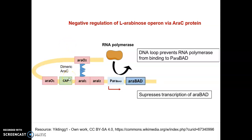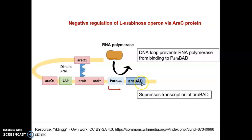The CAP region is not free for binding of the catabolite activator protein in association with cyclic AMP. When glucose levels are high, cyclic AMP levels are low, so cyclic AMP cannot bind to the CAP protein. This region is sequestered and unavailable. In the looped form, the promoter for the arabinose genes cannot be bound by RNA polymerase, so the DNA loop prevents RNA polymerase from binding to the araBAD promoter, maintaining the operon in the suppressed state.